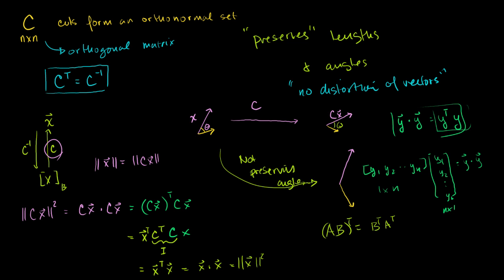So the length of Cx squared equals the length of x squared, which tells us the length of Cx equals the length of x, since both quantities are positive. I've shown that orthogonal matrices definitely preserve lengths. Now let's see if they preserve angles.